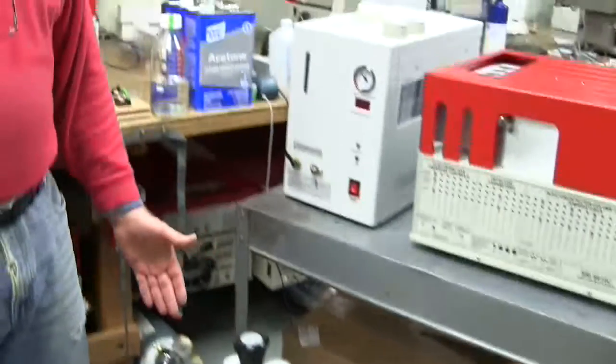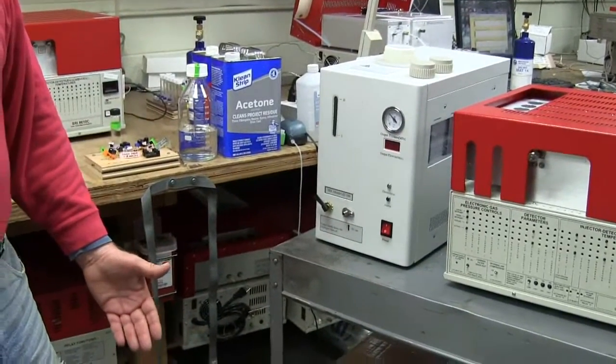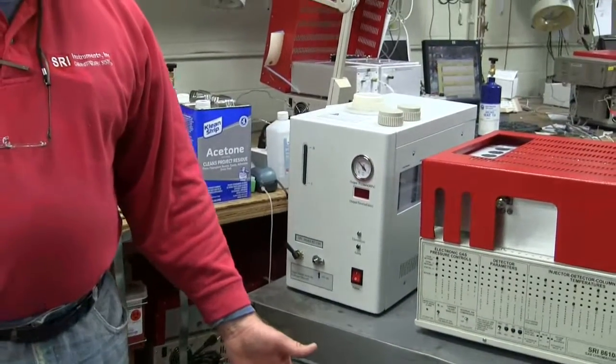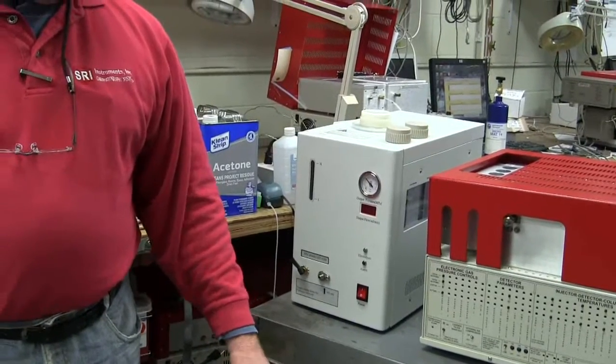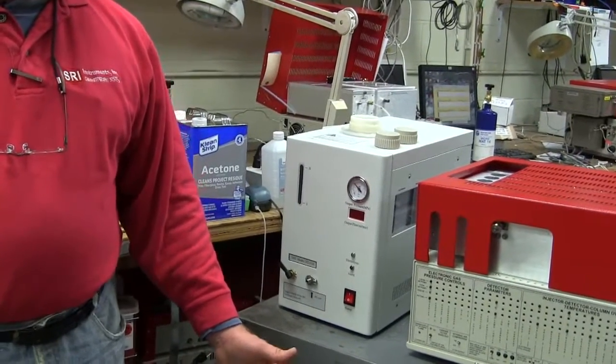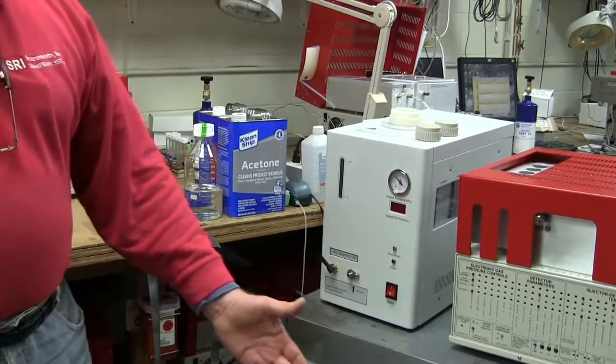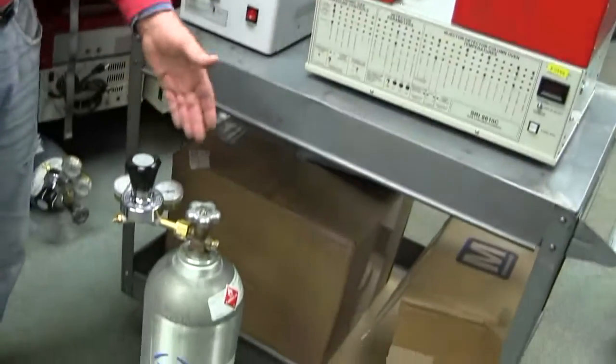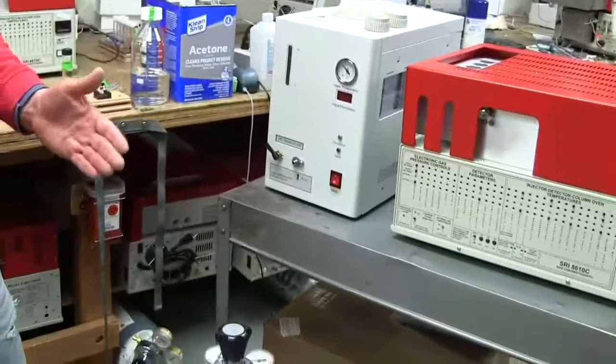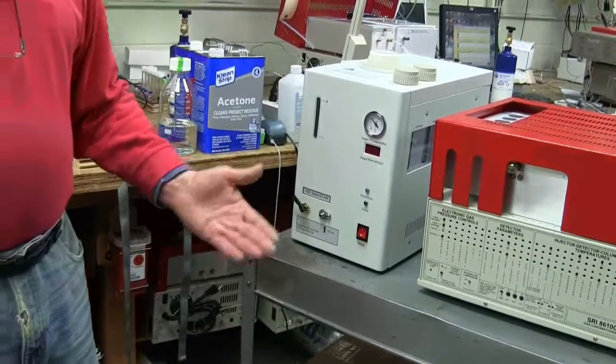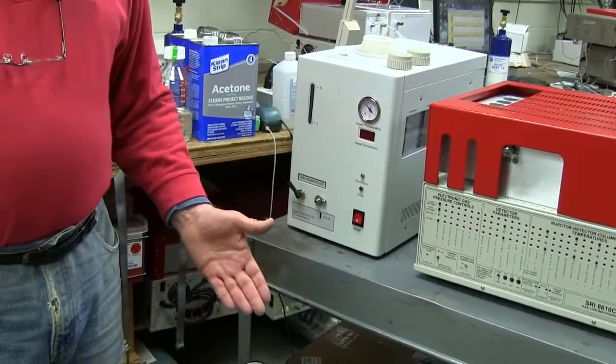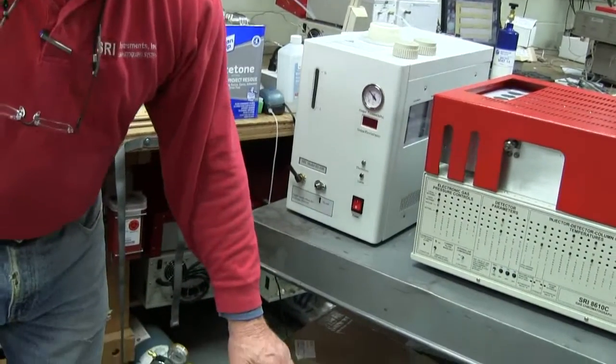Pretty much every city has a welding supply business that's happy to rent you a cylinder of hydrogen. It usually costs about $100 for the cylinder, and then they charge you 25 or 30 cents a day for the rental of the cylinder. There's enough gas in one cylinder to run the GC for about six months or maybe even all year, depending on how many hours per day you're using it.